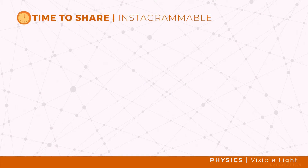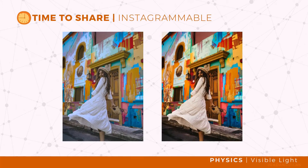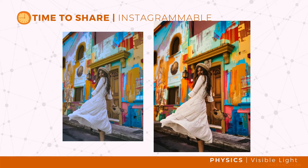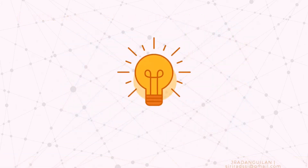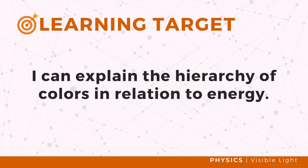If I ask you which of these two pictures is Instagrammable, you might probably choose the picture on the right. Let me guess you chose this because the picture looks lively because of its vibrant colors. We see this because of light. In this lesson we will talk about visible light and colors.